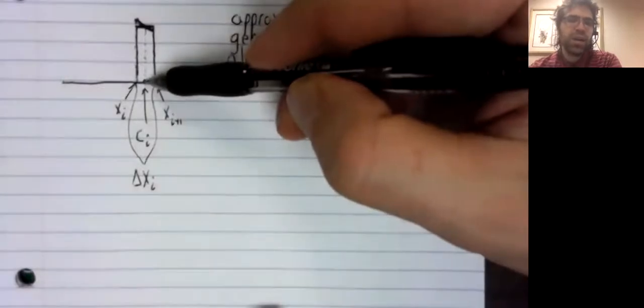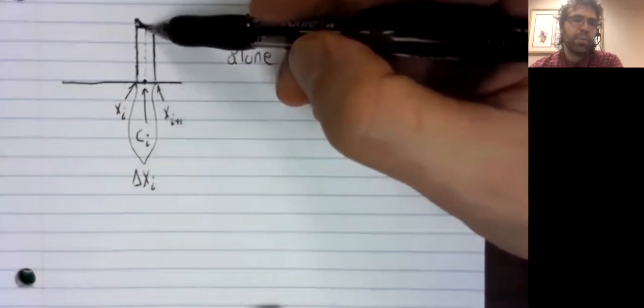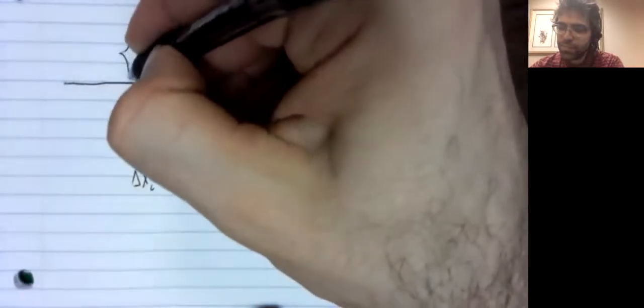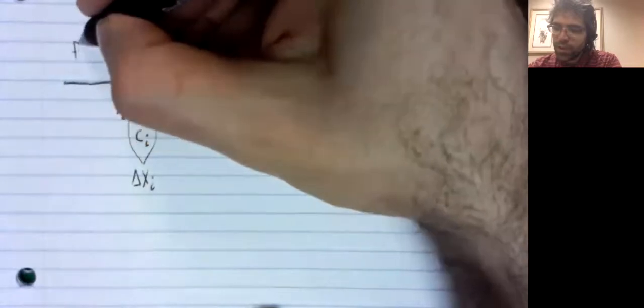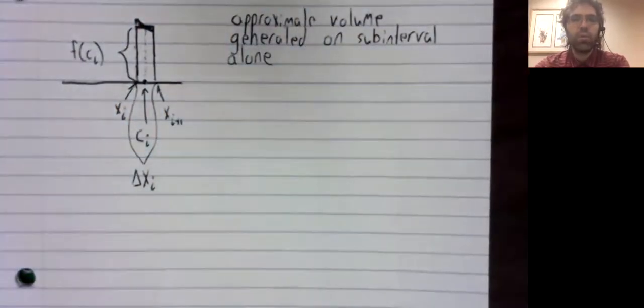We used c sub i to create this rectangle. We started at zero and went up to the curve, went up to f of c sub i. So, the height of this rectangle is f of c sub i.